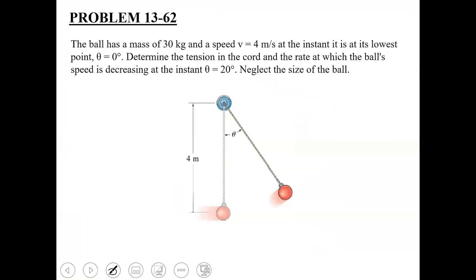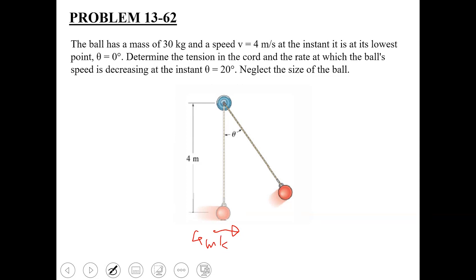Moving to the next problem, which is very similar to the one we just solved. We have a pendulum with a mass of 30 kg, and this ball was already traveling with a speed of 4 meters per second when it is at its lowest position. When the pendulum is at its lowest position, the ball is traveling towards the right with a speed of 4 meters per second. At this instant, theta is equal to zero degrees.